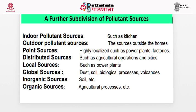A further subdivision includes indoor pollutant sources (such as kitchens) and outdoor pollutant sources. Point sources are highly localized — for example, a single power plant or factory. Distributed sources include agriculture operations and cities spread across large areas. Local sources include power plants, while global sources like volcanic eruptions can affect several countries. There are also biological, inorganic (soils), and organic (agriculture) source categories. In total, there are numerous types of classification found in the literature.